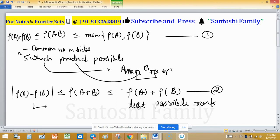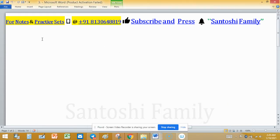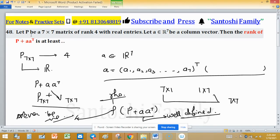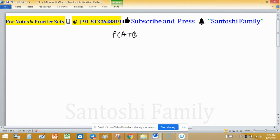Least possible rank. So it means least possible rank somehow, somehow he is asking about lower bound, lower bound of sum of rank. So rank of A plus B, because matrix P plus A A transpose.